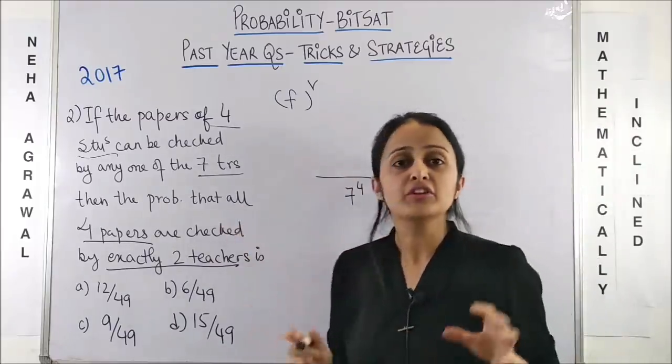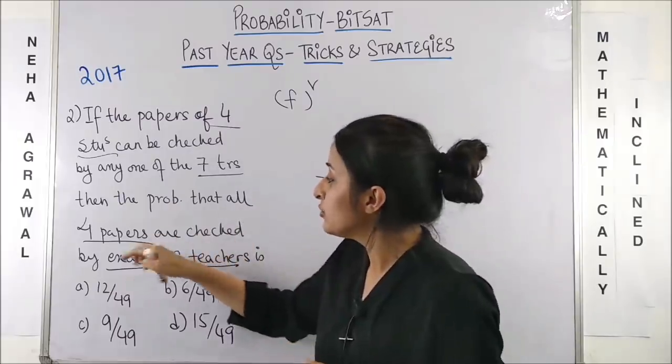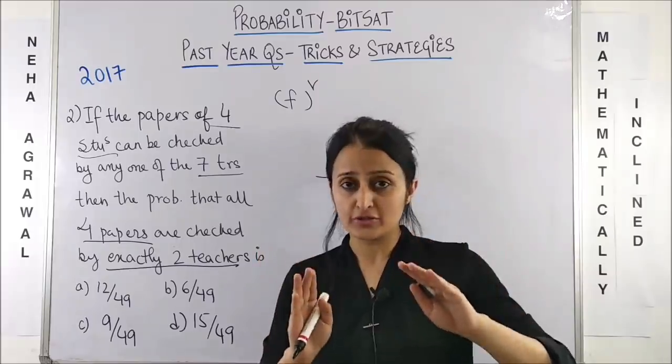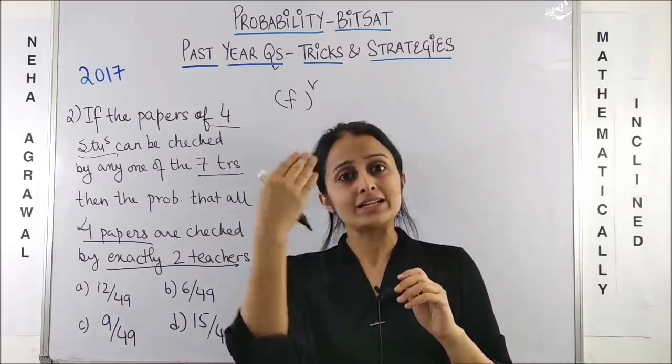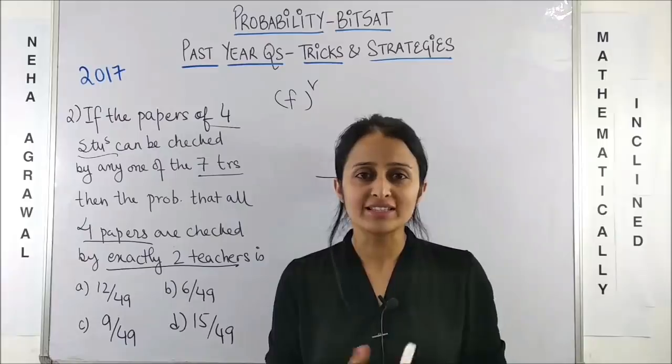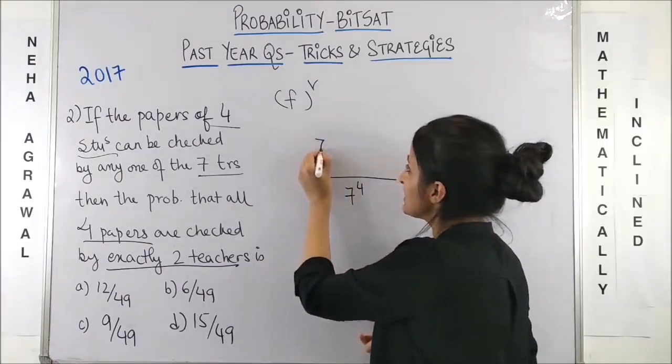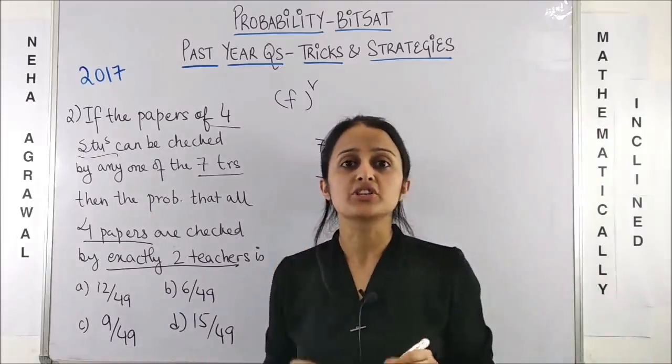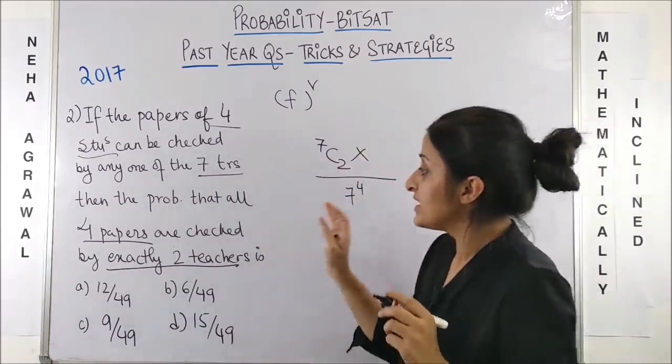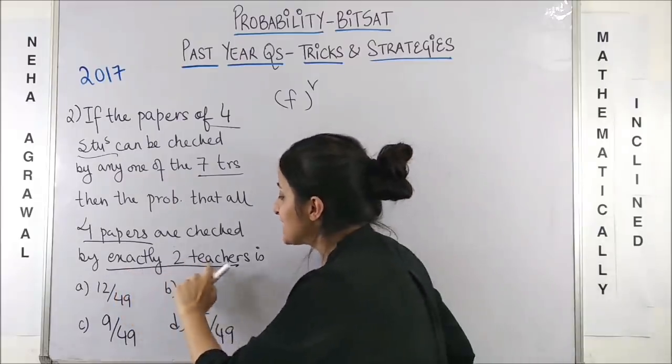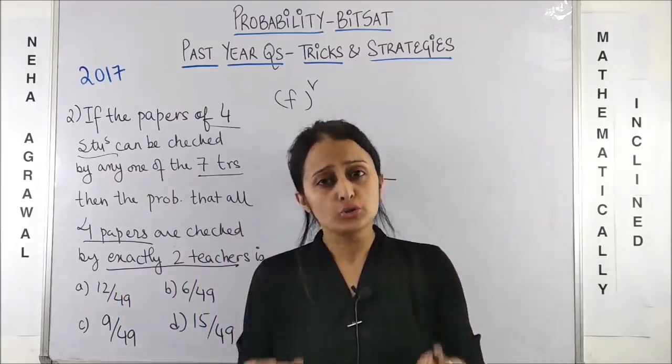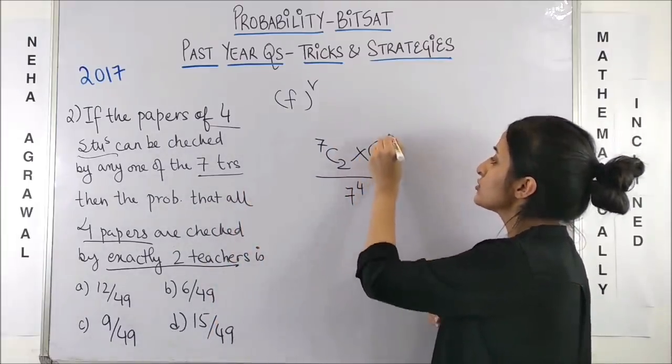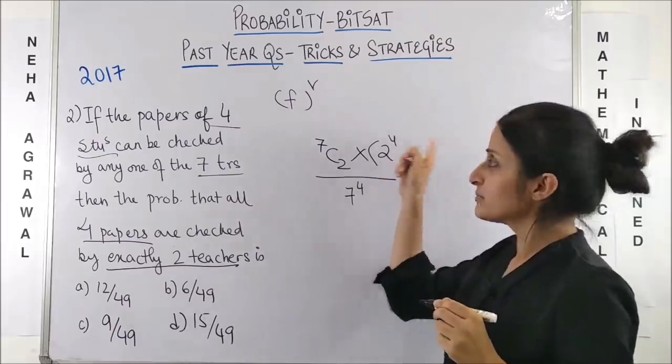Alright, now talking of the favorable outcomes. Now, we definitely know that 4 papers we want should be checked by exactly 2 teachers. So, first of all, boss, out of 7, let's select those 2 lucky teachers which will be involved in this correction. So, that makes it 7C2. So, out of 7, I am selecting any 2 teachers. Now, this thing is very important: by exactly 2 teachers. Now, first of all, 2 teachers and 4 papers going by the same logic can be dealt in 2 raised to power 4 ways. Fixed raised to power variable.